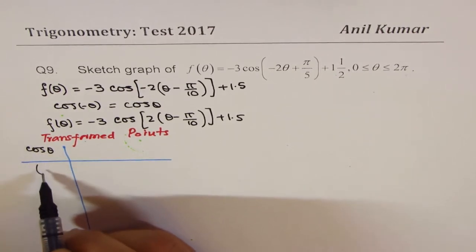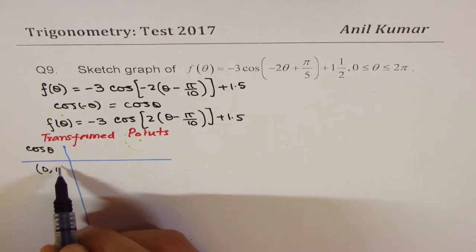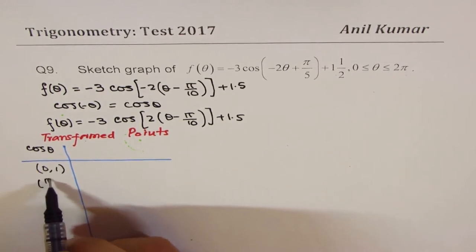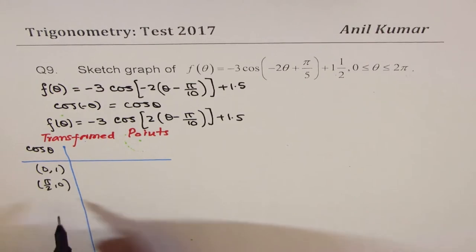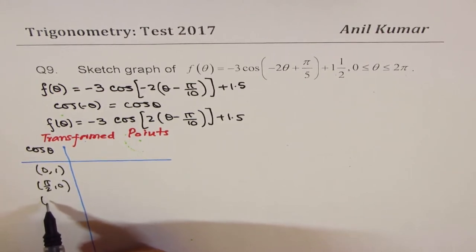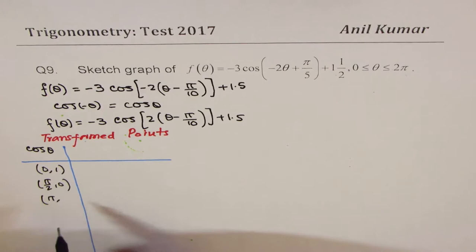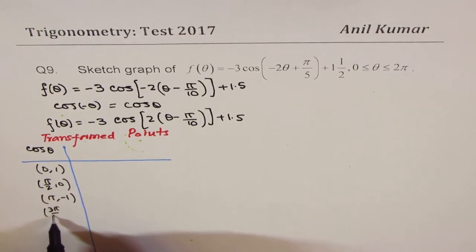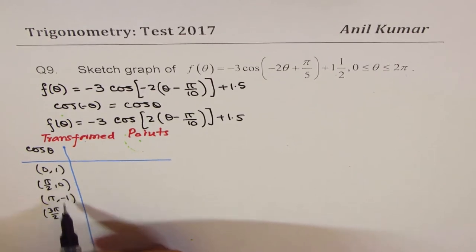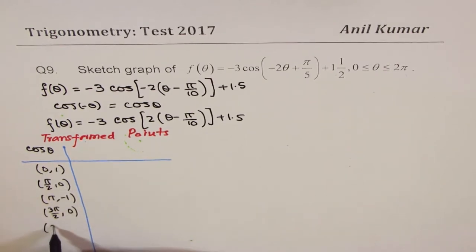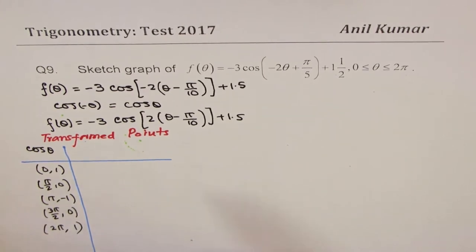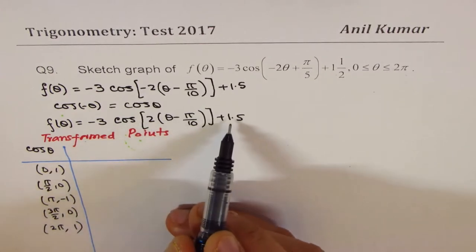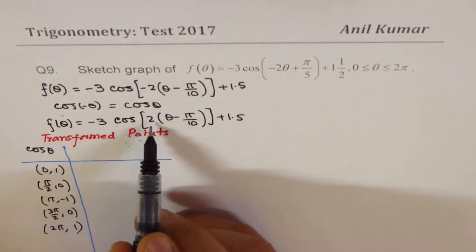The cosine function starts with (0, 1), then (π/2, 0), then (π, -1), then (3π/2, 0), and at 2π it is back to 1. That is the cosine function. In this particular case, you can clearly see the transformation: the x-values are getting divided by 2 and then you add π/10.